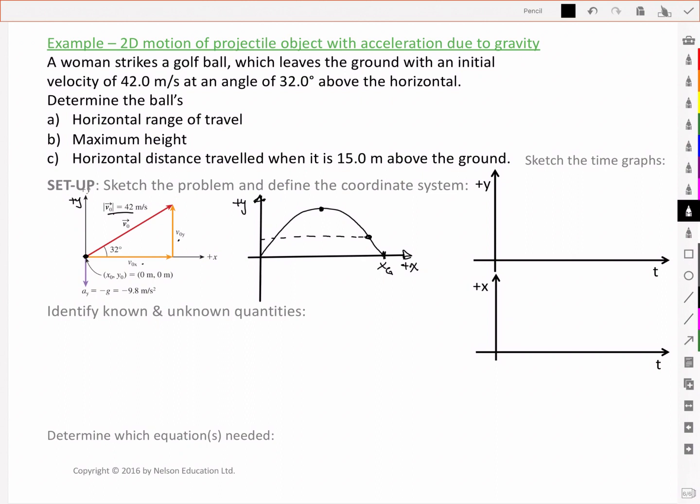Drawing that on our position time graphs, we've got a parabolic motion for our y-curve, a quadratic. We're interested in the horizontal range of travel. That takes us to here. So the time when it hits the ground where we've got a y equal to 0. We're interested in the maximum height. That's this location here, y max.